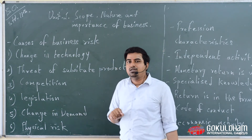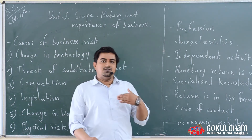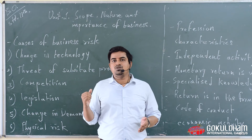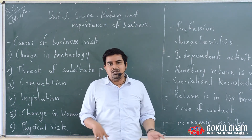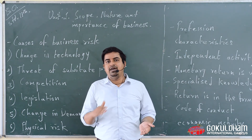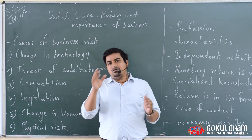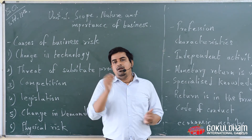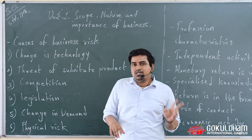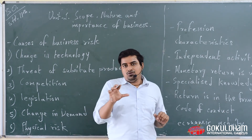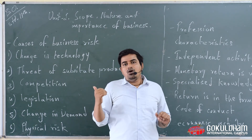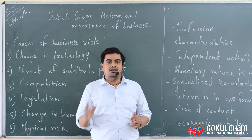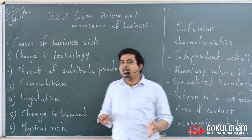The next risk is physical risk, which is associated with damage to the assets used by the business. जो business में assets use होते हैं उनके damages से related जो risk है उसको physical risk कहते हैं। For example, the risk related to damage of goods in transit and non-functioning of equipment and machinery — these two examples are given in the textbook. So these are the risks associated with business.